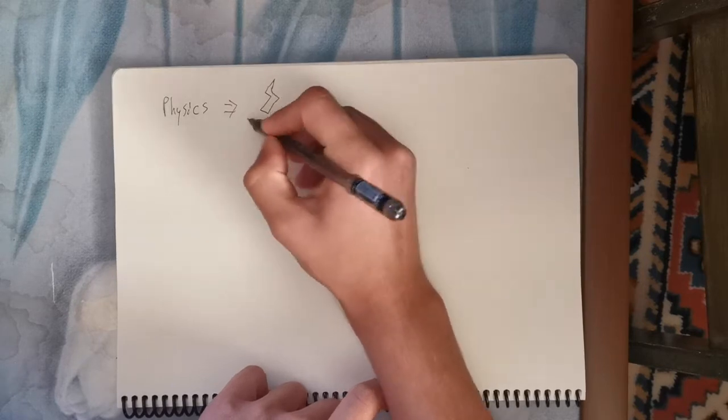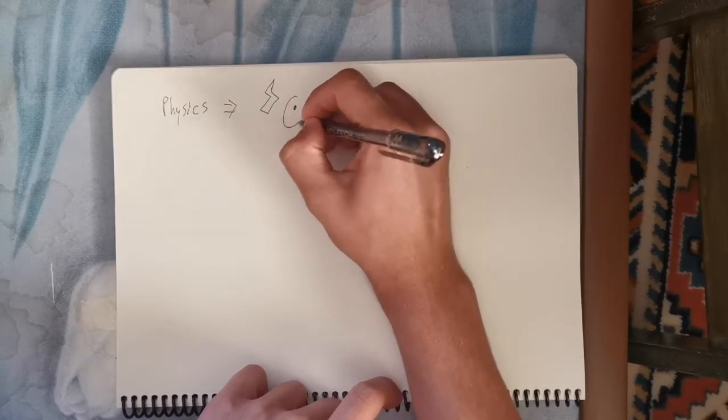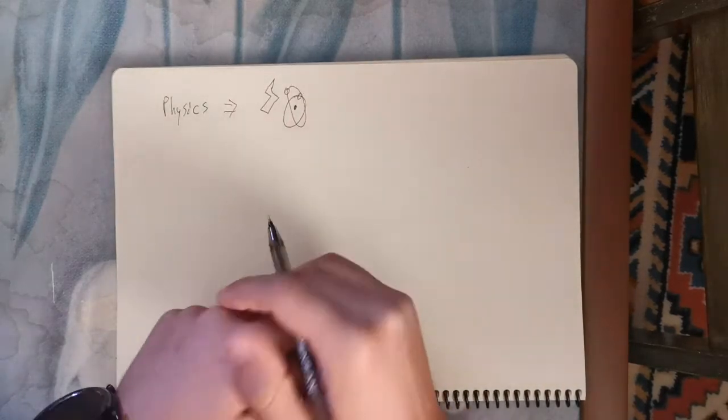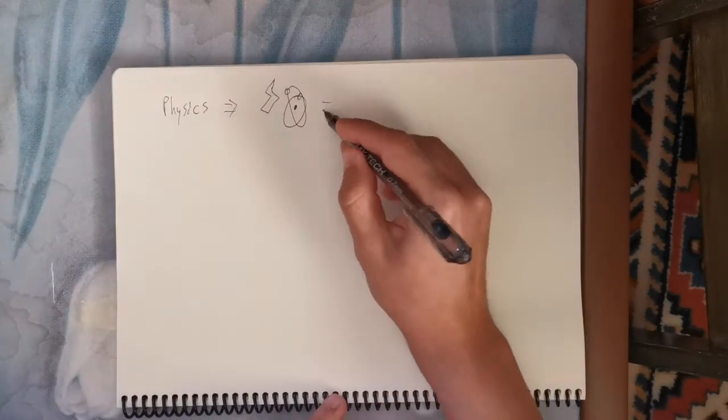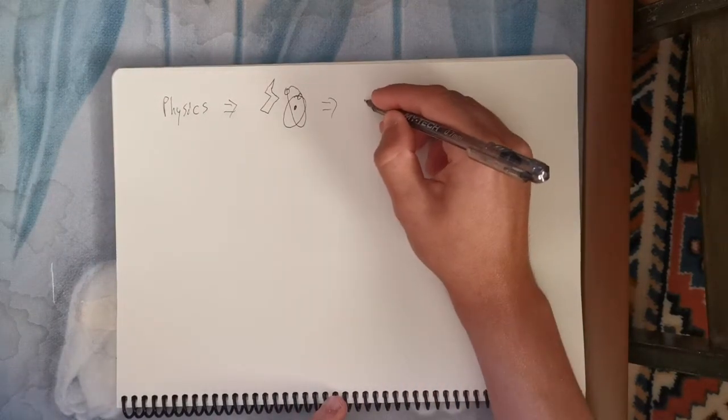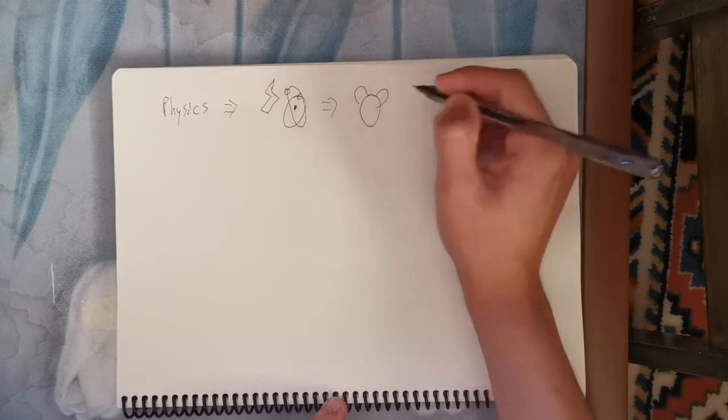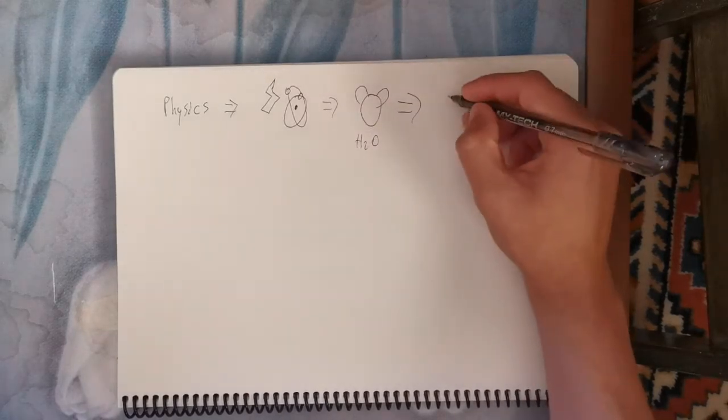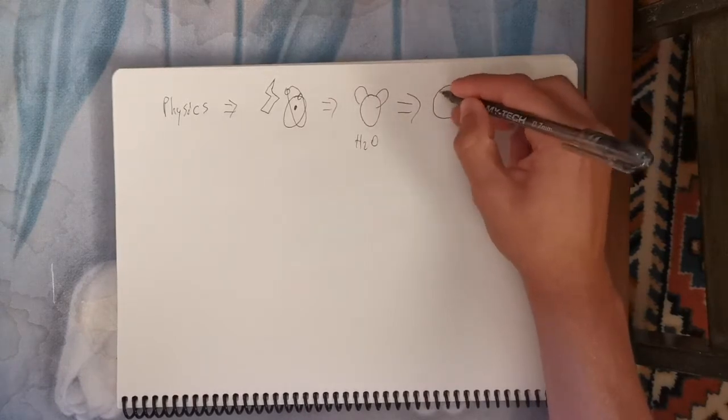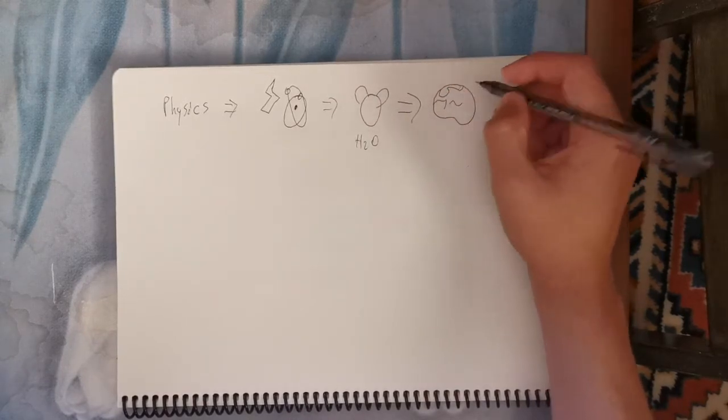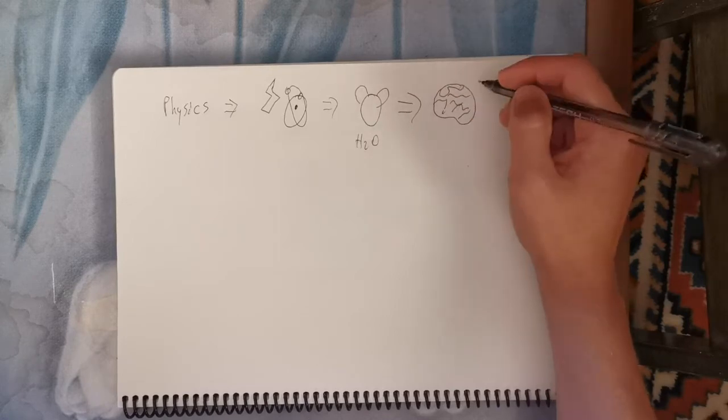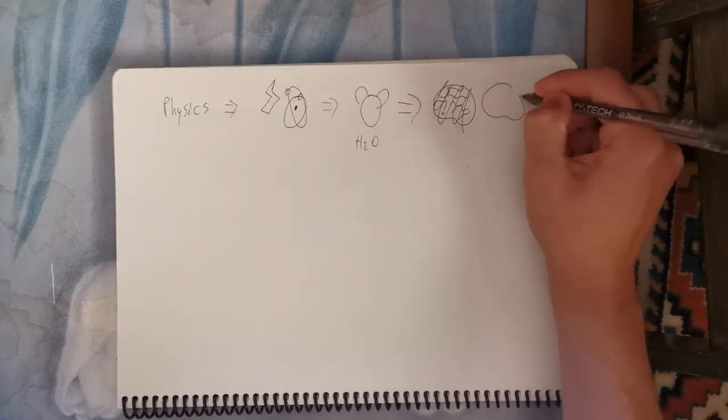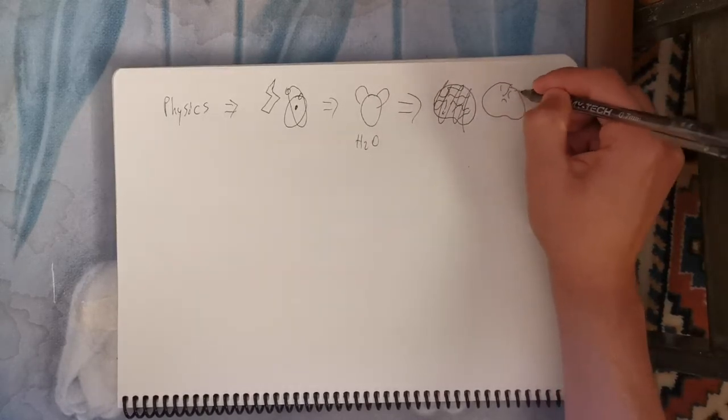...because physics creates electric stuff, which creates atomic stuff, which creates chemistry, which creates biology, and in this case, my smooth brain, which my smooth brain basically creates me. So physics essentially creates all of us, and even our decisions.